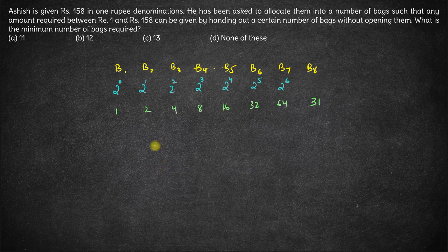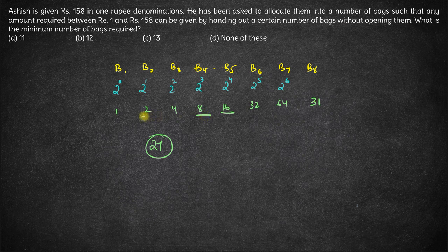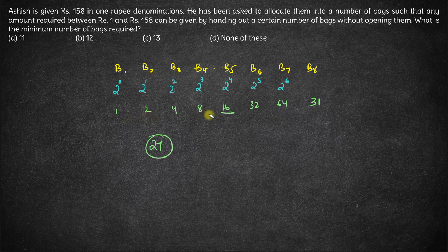Let's say someone comes and asks for 27 coins. How can you give 27 coins? 27 is 16 plus 8, you give B5, B4, 24 plus B2 and B1. So the sum of these 4 bags will come out to be 27.